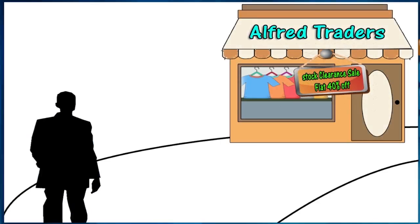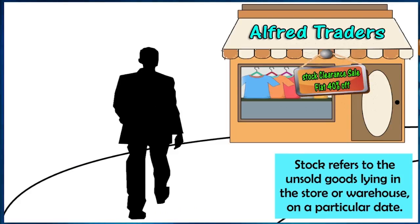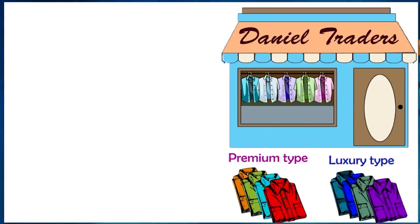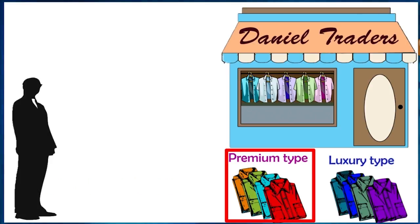One day Daniel was walking by another store and he saw a sign which read 'Stock Clearance Sale - Flat 40% off.' This is when it hit him that he too could sell off some of the shirts from his store at a discounted price. He had premium and luxury type of shirts, and the premium kind needed to be cleared as soon as possible because they were going out of fashion.